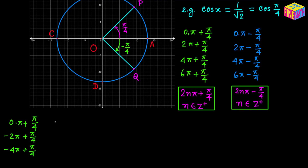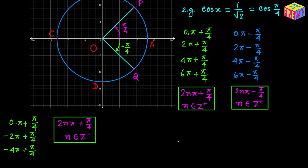From here we can say the pattern is 2n times pi plus pi over 4, where n is a negative integer. Similarly, let's rotate OQ in the clockwise direction. Right now OQ is making a negative angle of pi over 4, written as 0 times pi minus pi over 4.